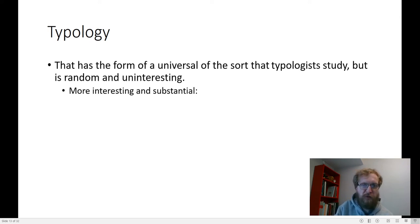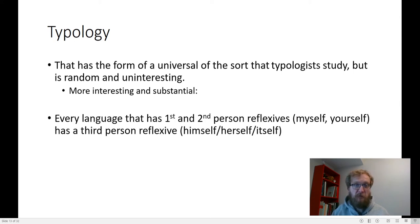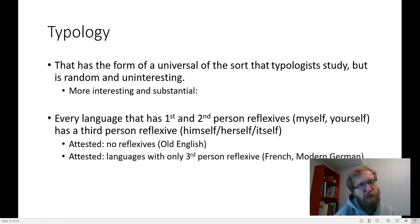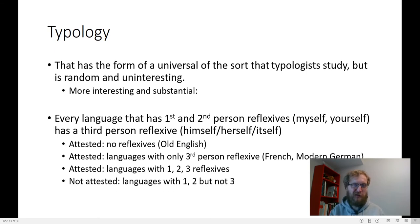A more interesting, more substantial universal that we might study is the observation that every single language that has a first- and a second-person reflexive pronoun, for example, myself, yourself, those kinds of words, also has a third-person reflexive, like himself, herself, itself, themselves. That means we have categories. There are languages that have no reflexive first- or second- or third-persons at all, right? Like, Old English is one of those languages. There are also some languages that only have a third-person reflexive. For example, Modern German has, I think, Sieg. There are also languages with first, second, and third, like English, but there are no languages that have any deviation from that category. Isn't that interesting? Why? That's typology.